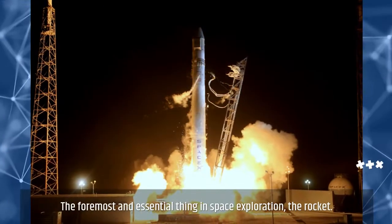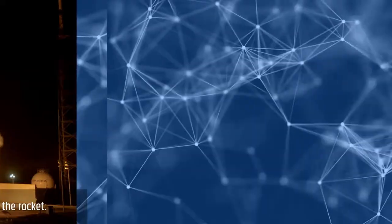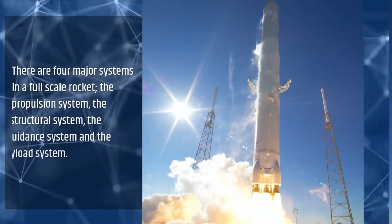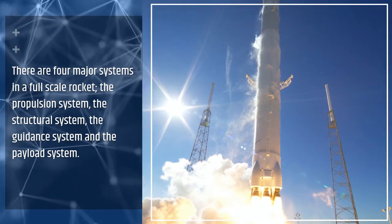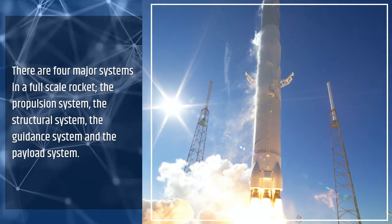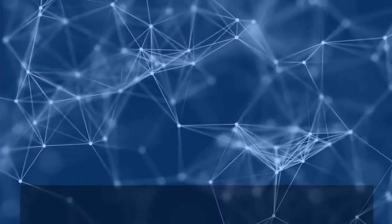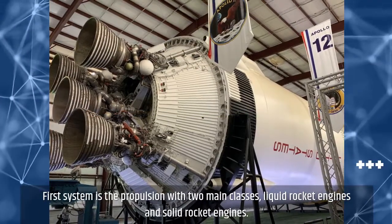The foremost and essential thing in space exploration: the rocket. There are four major systems in a full-scale rocket - the propulsion system, the structural system, the guidance system, and the payload system. The first system is propulsion with two main classes: liquid rocket engines and solid rocket engines. The second is the structural system or frame, similar to the fuselage of an airplane.